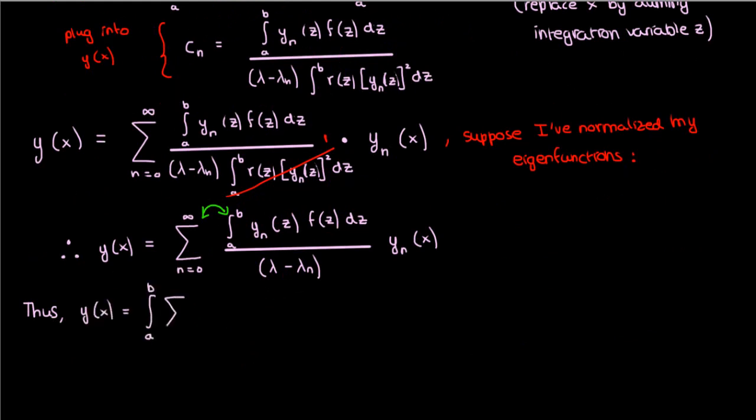y equals the integral from a to b of the sum from n equals 0 to infinity of y sub n of z times y sub n of x over lambda minus lambda n times f of z dz.